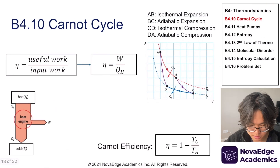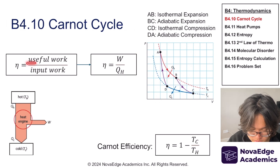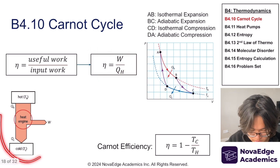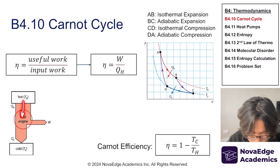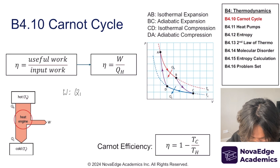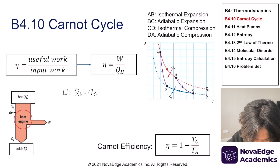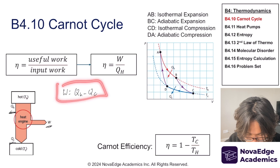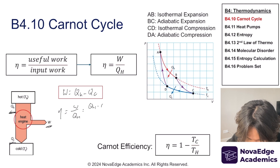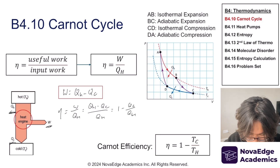Now let's analyze the efficiency of the Carnot cycle. Efficiency equals useful work over input energy — how much thermal energy we supply. A simplified diagram shows Qh going in, some becoming work W and some going to Qc (the cold plate). The key relationship is: W equals Qh minus Qc, or equivalently Qh equals W plus Qc. Using this, efficiency equals Qh minus Qc over Qh, which simplifies to one minus Qc over Qh.